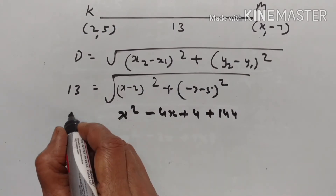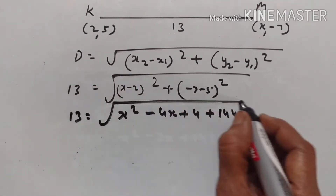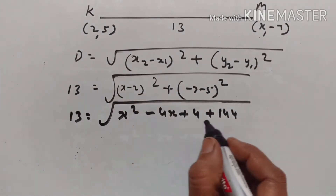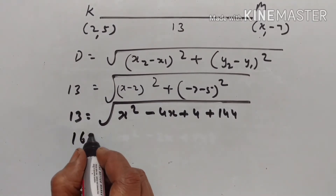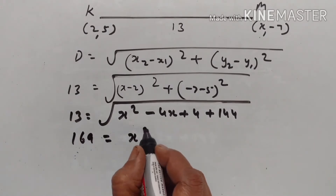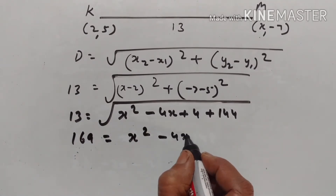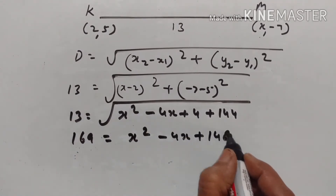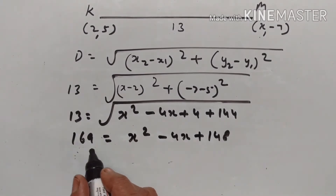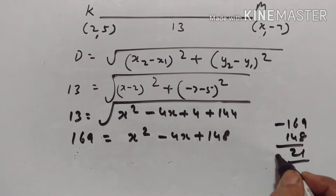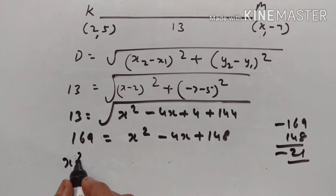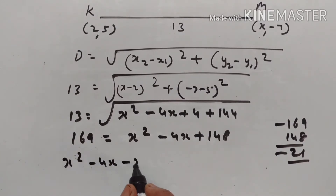So 13 = √(x² - 4x + 4 + 144), which simplifies to 13 = √(x² - 4x + 148). Squaring both sides: 169 = x² - 4x + 148. Bringing 169 to the right: 169 - 148 = 21, so x² - 4x - 21 = 0.